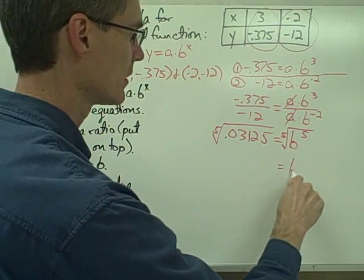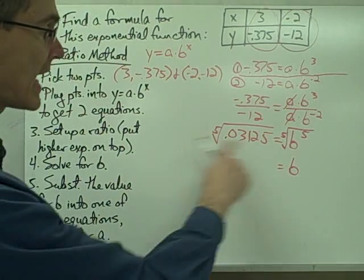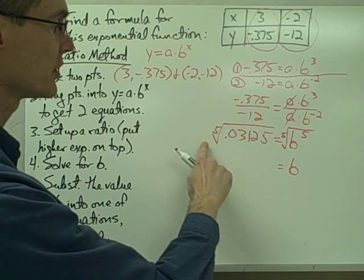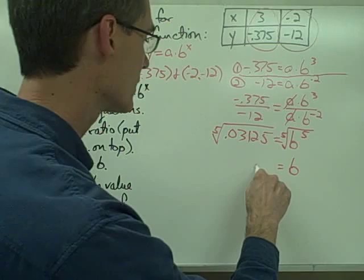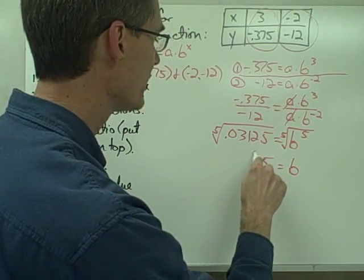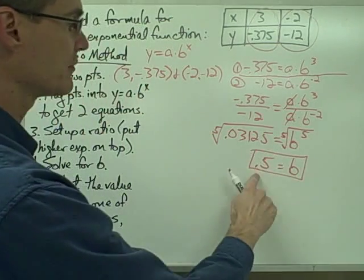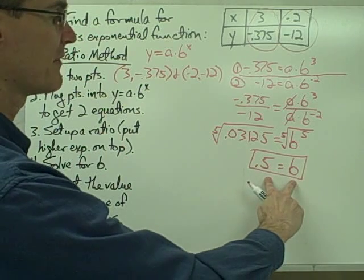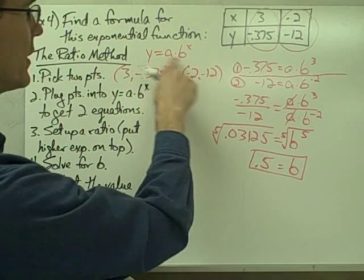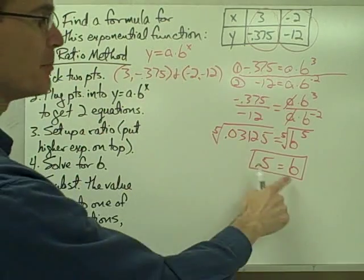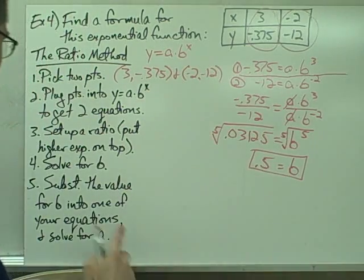And if I take my calculator and punch in the fifth root of 0.03125, that gives me 0.5. So now I have just solved for my value for b. I know that b in my exponential function, in the form of my exponential function, b is equal to 0.5. So I've got my value for b.